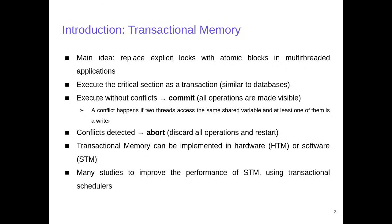I will start with a brief background on transactional memory. The idea of transactional memory is to simplify parallel programming by replacing the use of explicit locks with atomic blocks, executing a critical section of a multithread application as a transaction. If a transaction executes without conflicts, it will commit. A conflict happens if two threads access the same shared variable, and at least one transaction writes to this variable. Otherwise, if a conflict is detected, one of the transactions must abort, discarding all operations made inside it, and restart the transaction until a commit is possible.